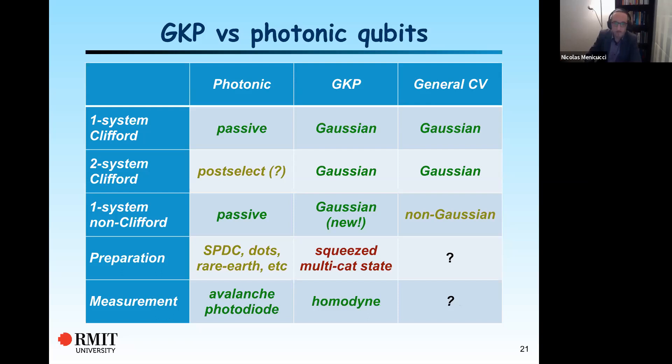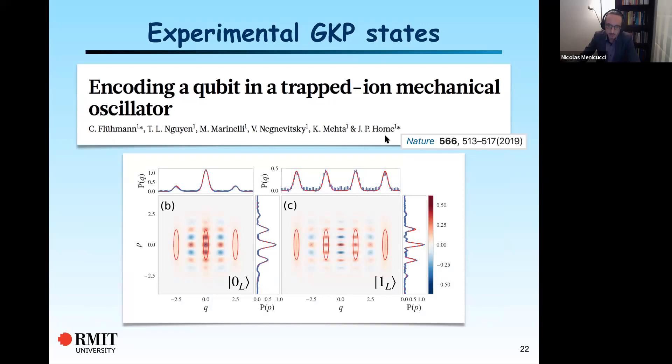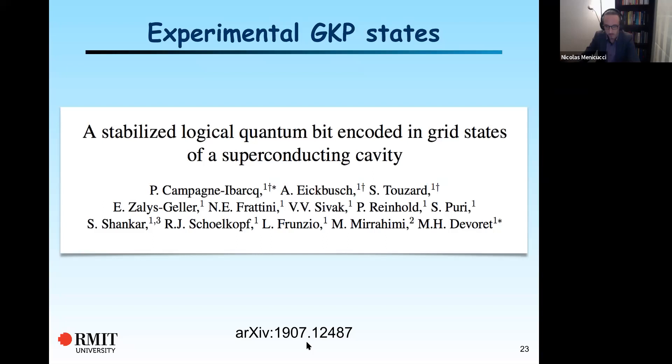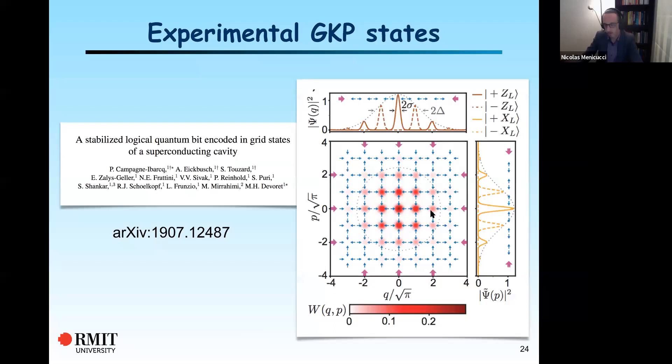Just some brief results in nature. Last year there was a demonstration in trapped ions of these GKP qubits — here are the Wigner functions and the probability distributions for them. This was also demonstrated in superconducting qubits, though I'm not sure if that has been published yet. It has not yet been demonstrated in optics, although there are proposals.